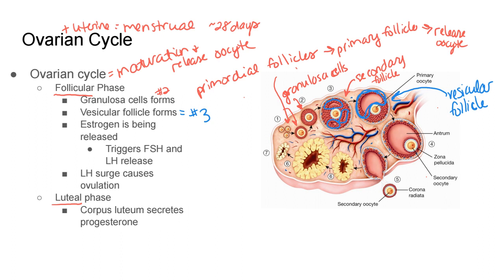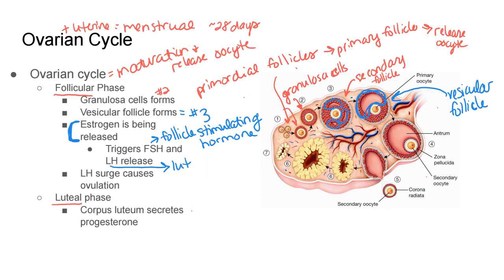So we went from primordial to primary follicle, laid down those granulosa cells to mature into a secondary follicle, and now with the big fluid-filled space, we have a vesicular follicle. During this whole time, lots and lots of estrogen is being released. As these follicles are maturing, estrogen is constantly being released — more and more — and as that estrogen increases, it goes up to the pituitary, that gland in the brain, to stimulate the release of two more hormones: FSH, which is follicle stimulating hormone, and LH hormone.